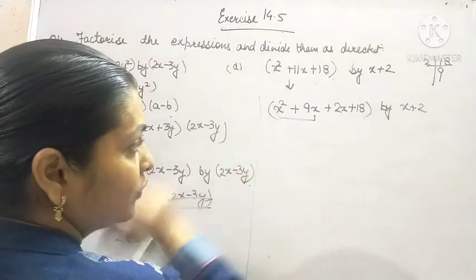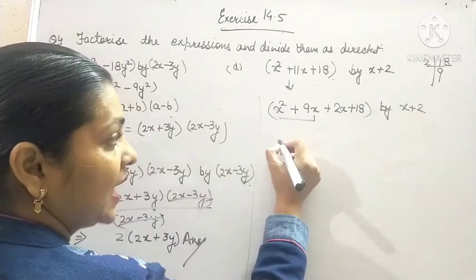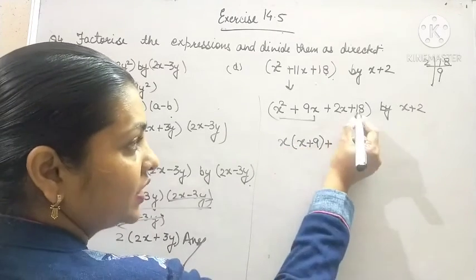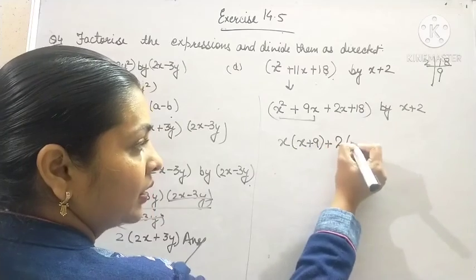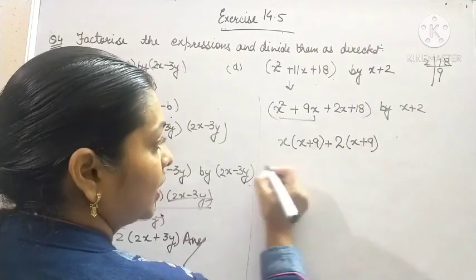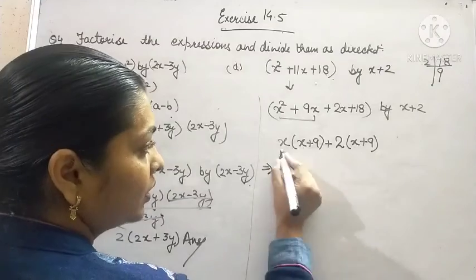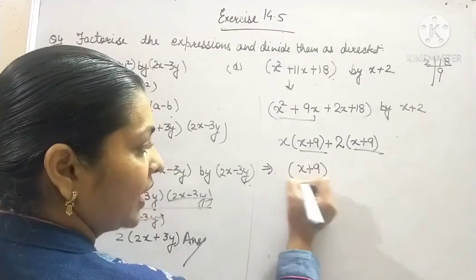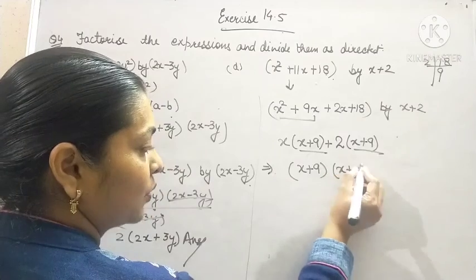Now, see out of these two terms, x is common. What will be left is x plus 9. Now, x plus 9 is common. So, we will take out x plus 9. What will be left? x plus 2.